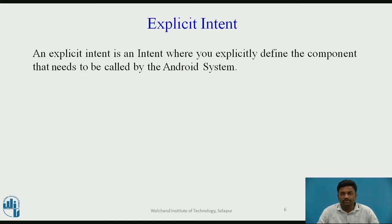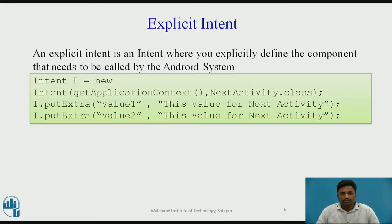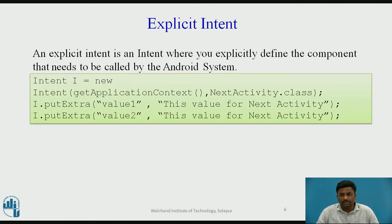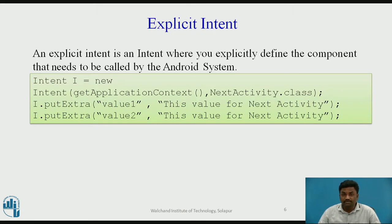Explicit intent is an intent where you explicitly define the component that needs to be called. For example, one activity calling another activity. Activity one calling a second activity is an example of explicit intent. The code is: Intent i = new Intent(getApplicationContext(), NextActivity.class). There are two parameters: getApplicationContext() works as a 'this' pointer pointing to the current application, and NextActivity.class is the activity you want to load, passed as the second parameter.